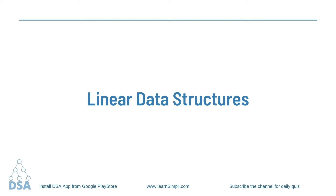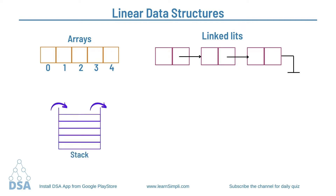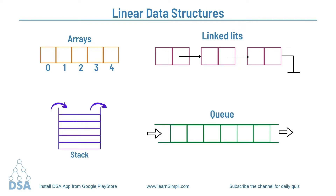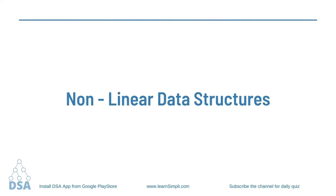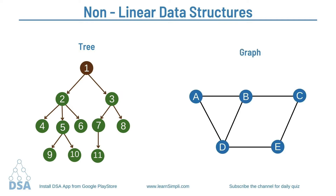So far in this series, we have learnt about the linear data structures: arrays, linked list, stacks and queues. All of these are basically collections of different kinds of data arranged in a sequential manner, each having a logical start and end. We also learnt about one non-linear data structure, the tree. In this video, we will learn about one more non-linear data structure: graph.